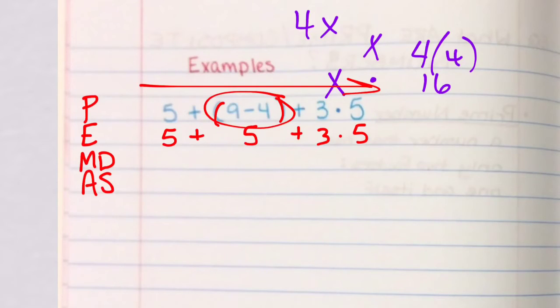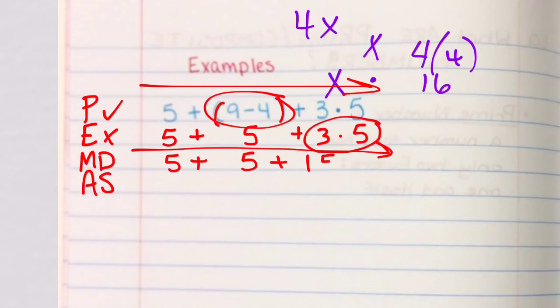So now, my parentheses, check. Exponents, I told y'all, y'all won't do until next year. Now we look and go across from left to right and do any multiplication or division. Looking from left to right, that's add, so we won't do it. It'll stay the same. We're still adding. It'll stay the same. Right here, there's a multiply step. So we're going to do our multiply. 3 times 5 is 15.